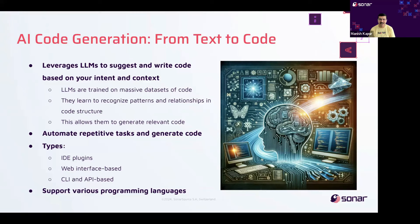These are supported on various IDEs such as Visual Studio Code, IntelliJ IDE, and others. Next is web-based code generation. This is platform-independent access from any device with a web browser. It allows for quick experimentation and collaboration without installing any additional software. Third, you have the command line interface-based tools. These offer power and customization with fine-grained control through parameters for automation and scripts, and integration into build pipelines. Example includes GitHub Copilot CLI. This is ideal for developers needing precise control or integration with complex workflows.